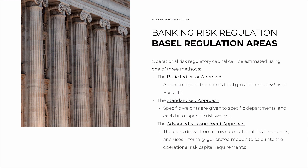Then we have the advanced measurement approach. In this case, the bank draws from its own operational risk loss events and uses internally generated models to calculate their operational risk capital requirements — predicting using historical data what the operational losses will be. Out of curiosity, the internal models approaches for the three risk categories have had inconsistent results on a bank-by-bank basis, but the advanced measurement approach for operational risk is the worst of all of them. Bank supervisors have not been able to find banks that reach similar capital levels for similar departments or business lines anywhere in the world.